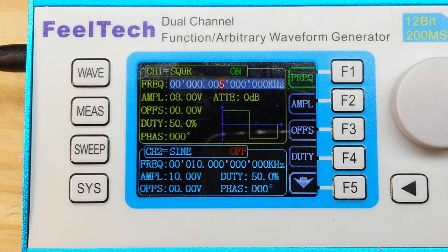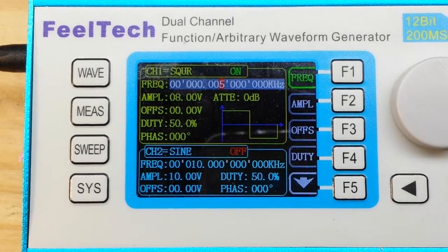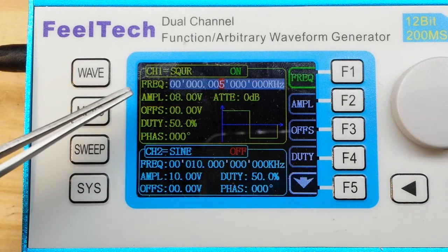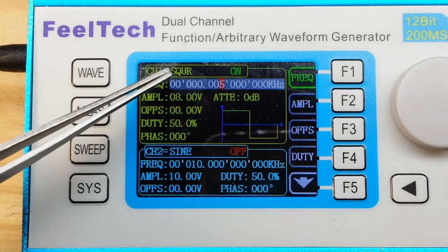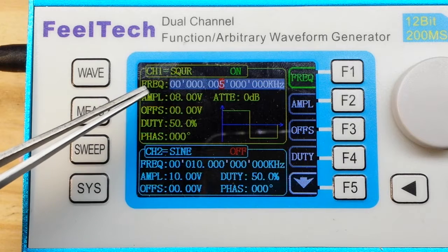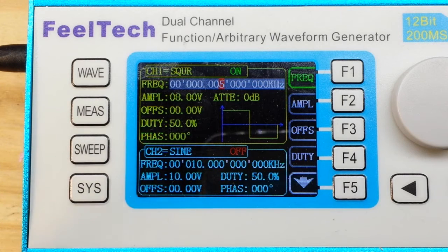So what does a function generator do? A function generator creates waveforms allowing you to prototype your circuits without having to design an oscillator. If you look here, you can see we can control the type of wave, right now we're on square, frequency, amplitude, offset, and duty cycle.